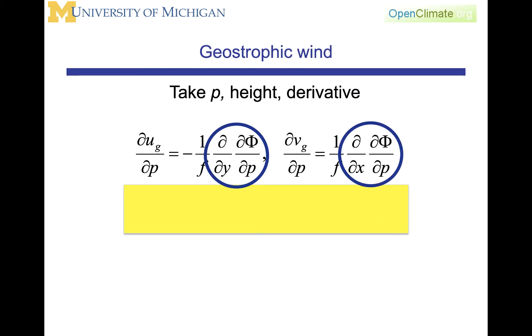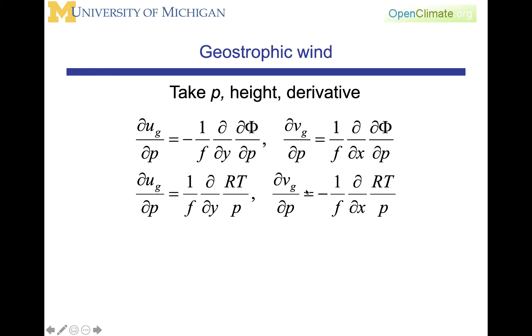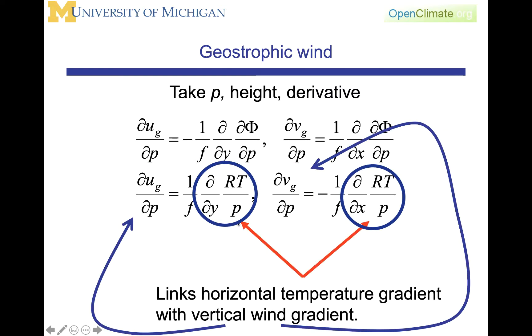At this point, we should be recognizing that d phi dp is the hydrostatic relationship and is equal to minus RT over p, where R is the gas constant, big T is temperature and p is pressure. We can then substitute for d phi dp, this relationship. And what we get is that the vertical gradient of the geostrophic wind is related to the horizontal gradients of temperature. This is explicitly shown here that we are linking the horizontal gradient of temperature with the vertical gradient of the wind.